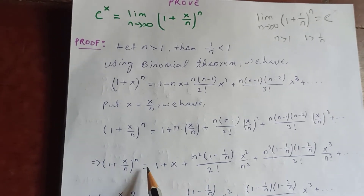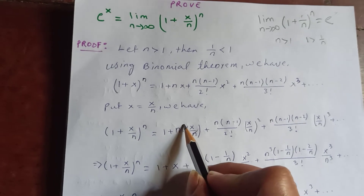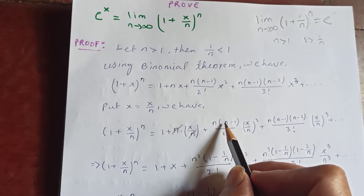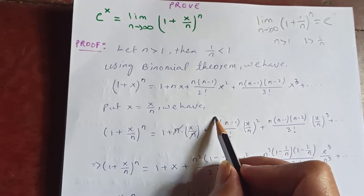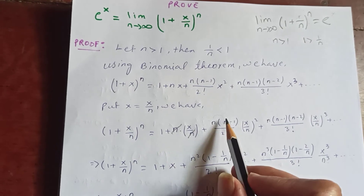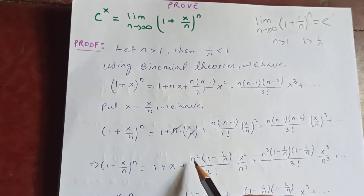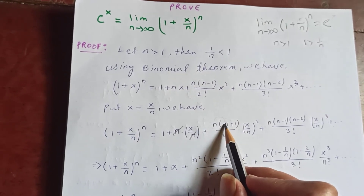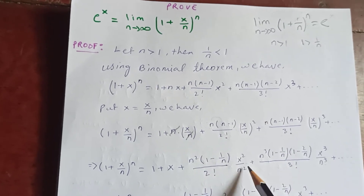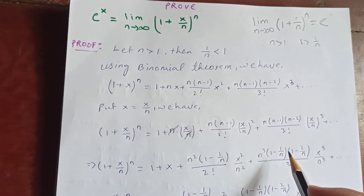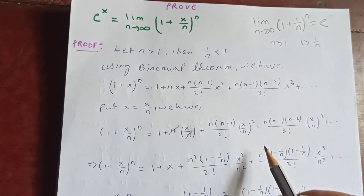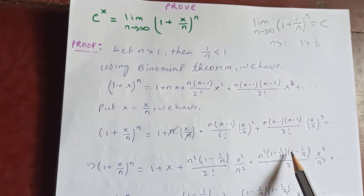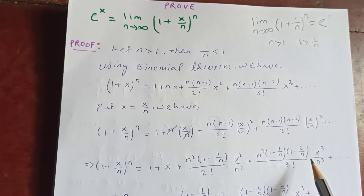Now (1 + x/n)^n becomes: the n's cancel out, giving 1 + x. Then taking n² in common here, we get (1 − 1/n)/2! · x². Then taking n³ in common, we get (1 − 1/n)(1 − 2/n)/3! · x³, and so on.